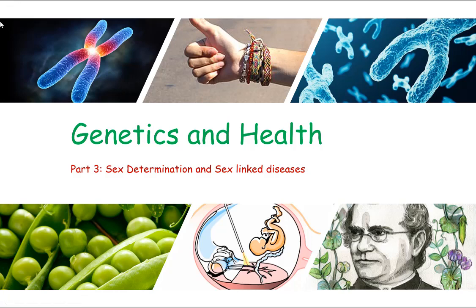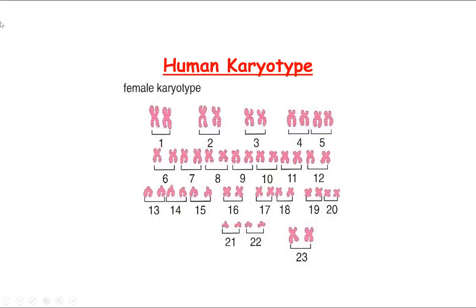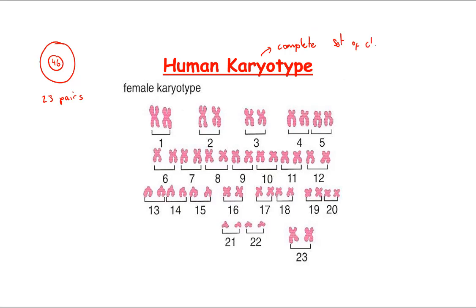The third part of this topic is sex determination and sex linked diseases. In each human cell there are chromosomes found within a nucleus, and within the nucleus of a normal human cell there are 46 chromosomes or 23 pairs. This diagram shows a human karyotype — when a complete set of chromosomes have been taken out and analyzed under a microscope.